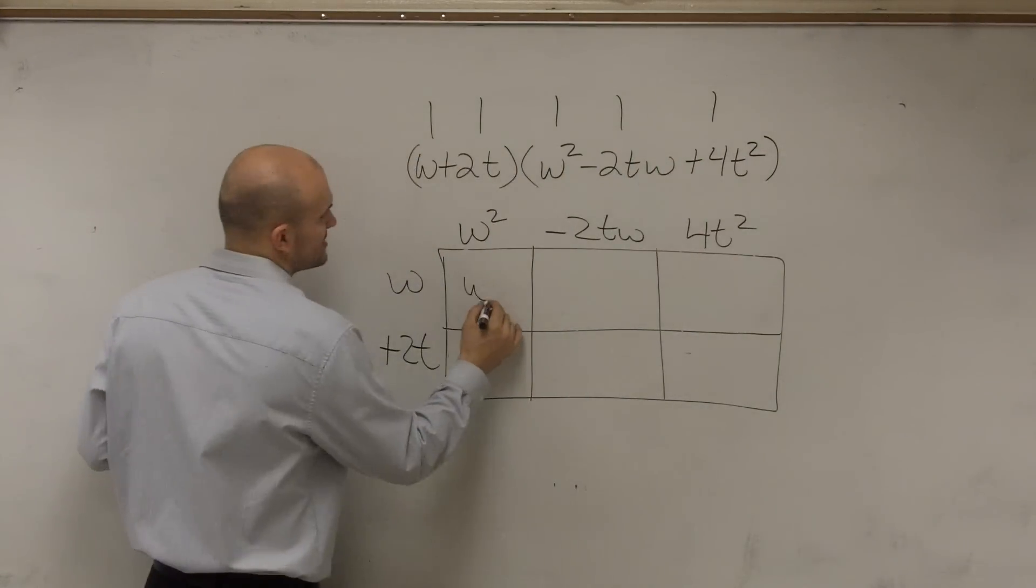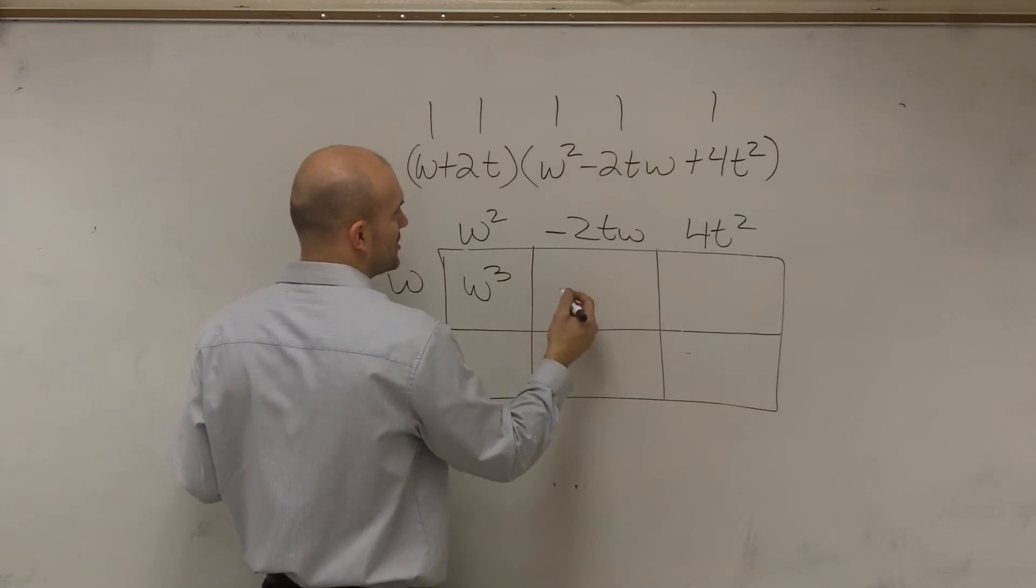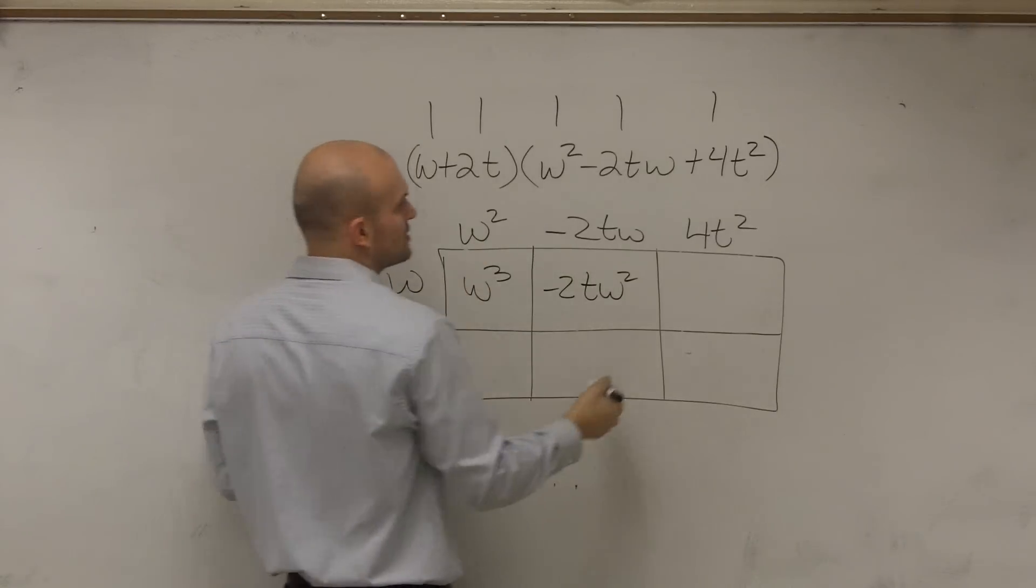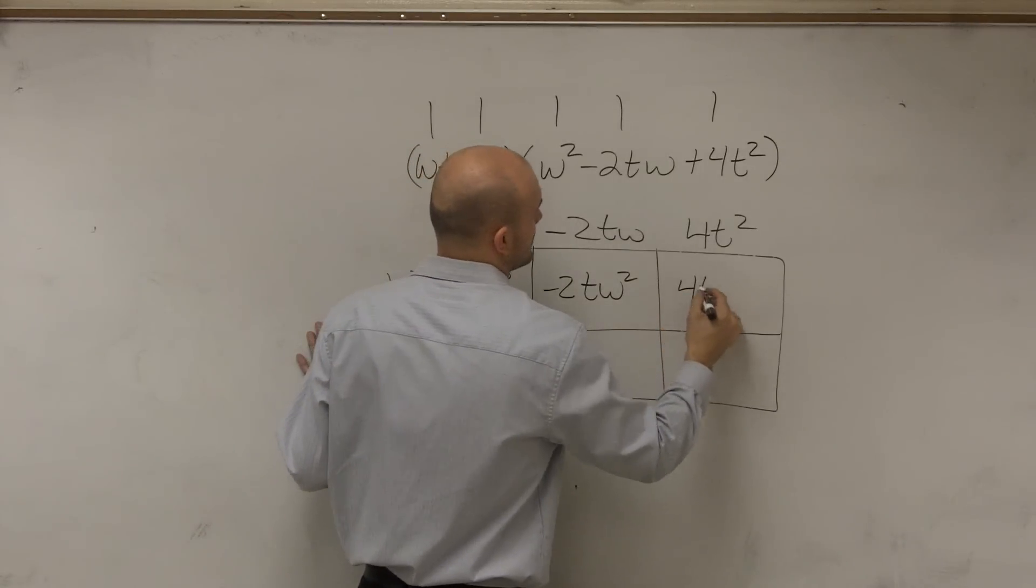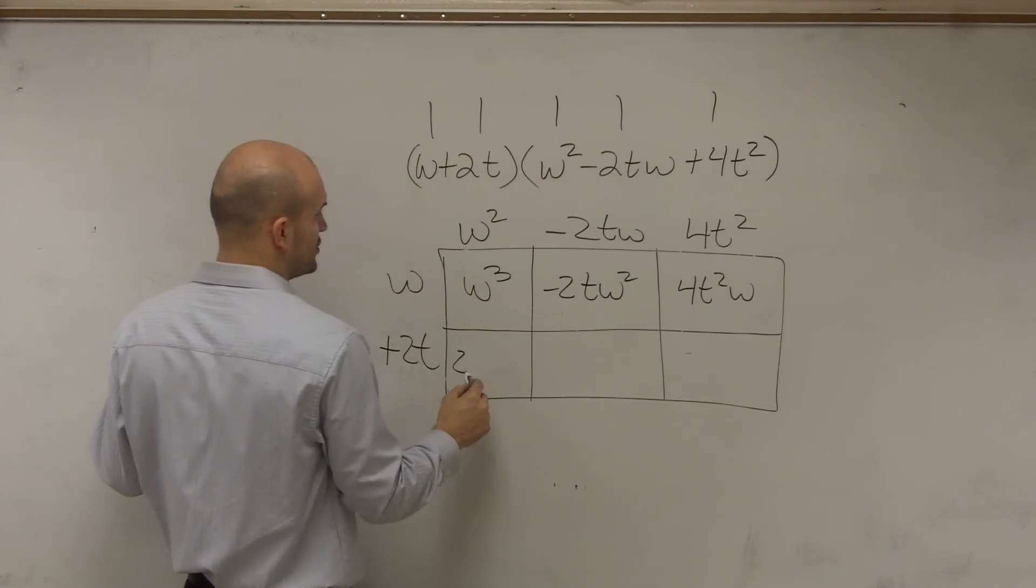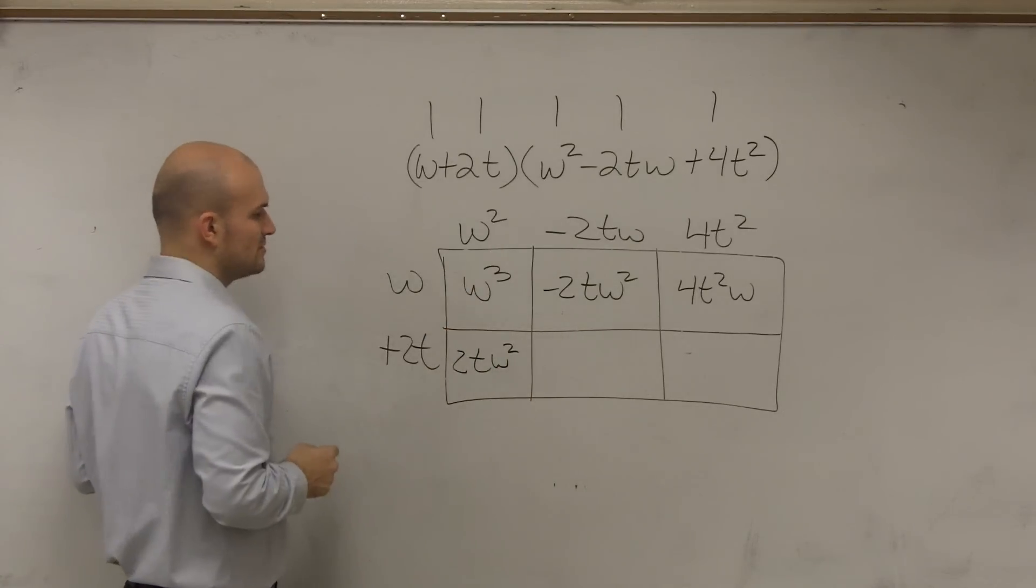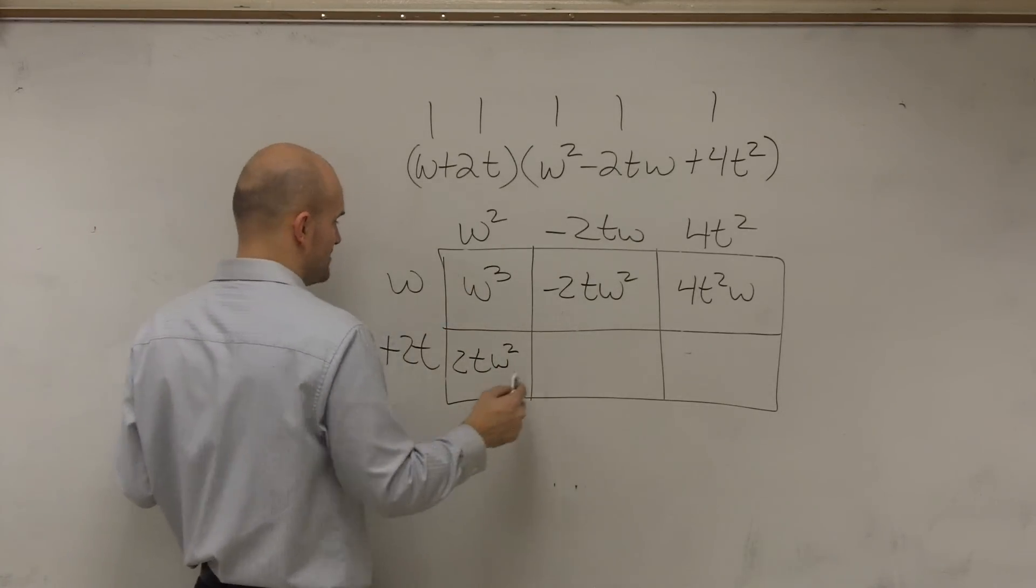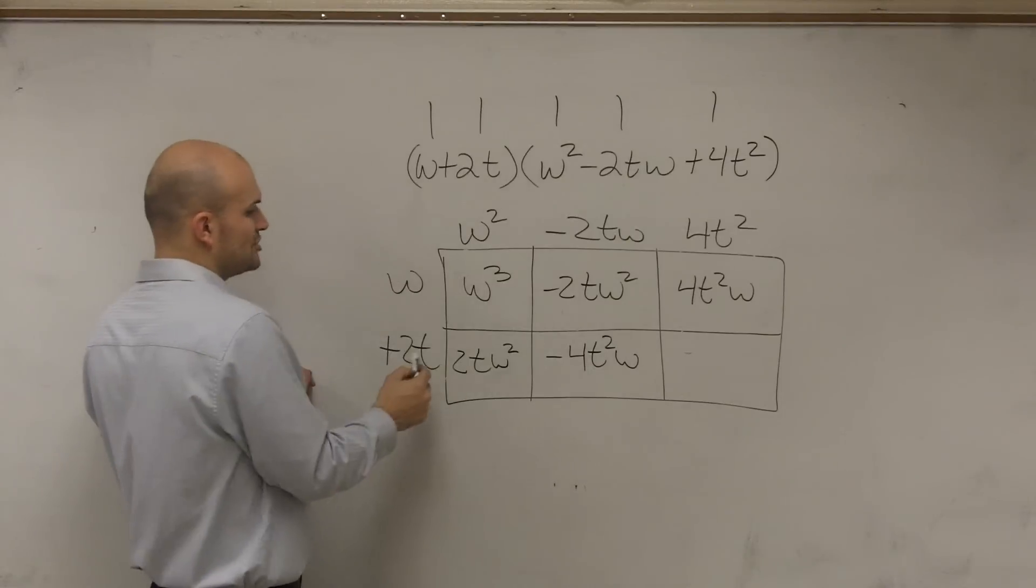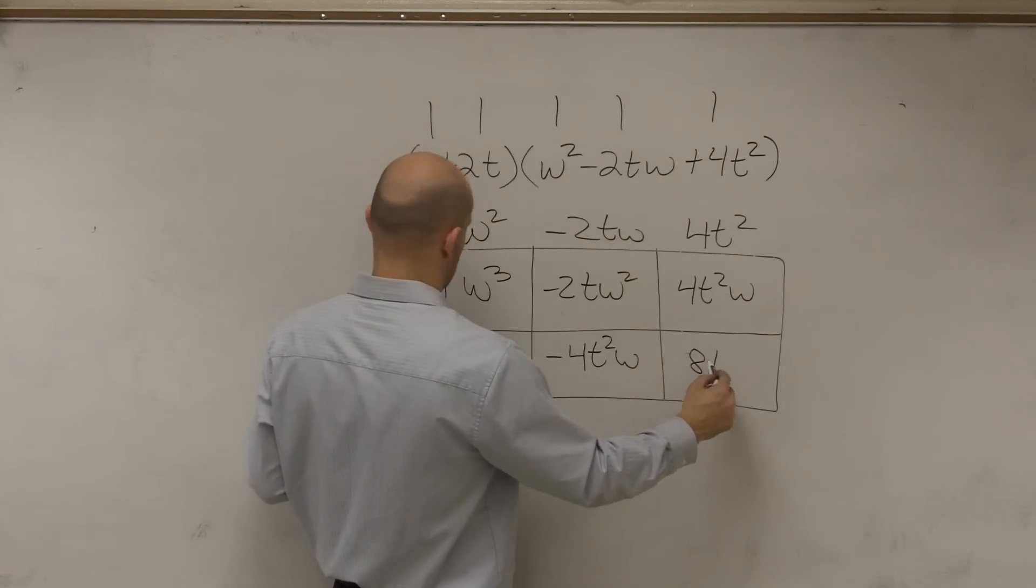So w times w squared is w cubed. w times negative 2tw is going to be negative 2tw squared. w times 4t squared w is 4t squared w. w squared times 2t squared is 2tw squared. 2t times negative 2tw is going to be negative 4t squared w. And then 2t times 4t squared is going to be 8t cubed.